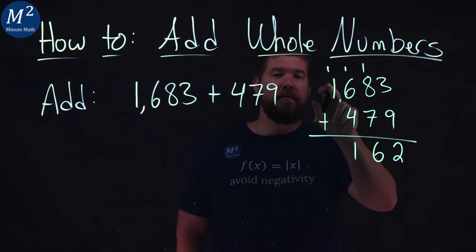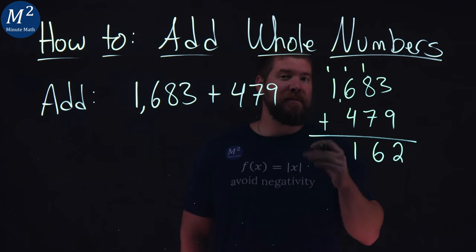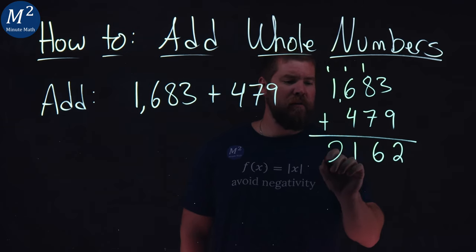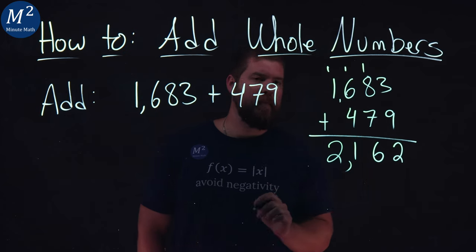1 plus 1 is 2. There's nothing here in the second number, so it's like a 0 there. And we put a 2 right here. Let's put a comma, and there we have it.